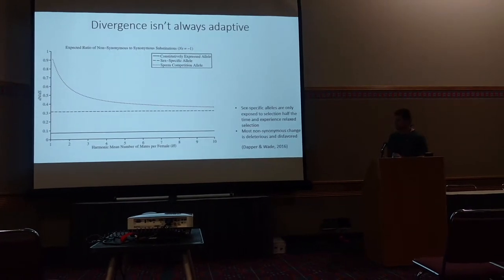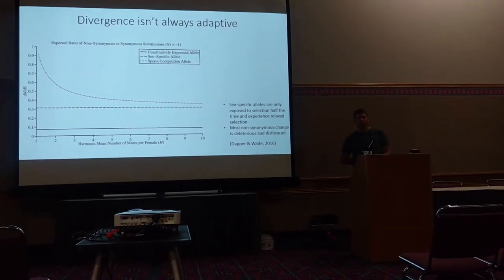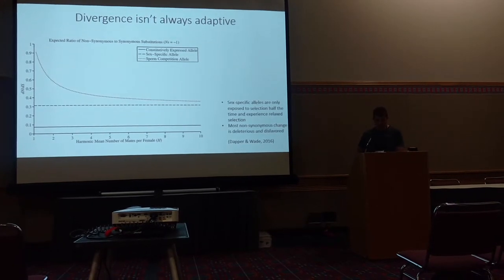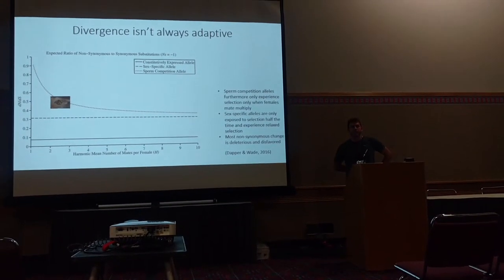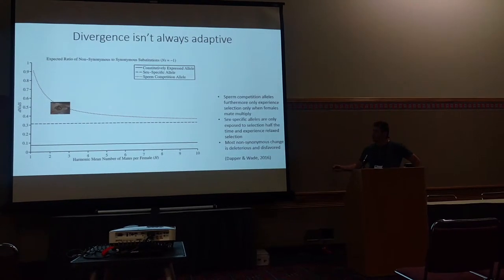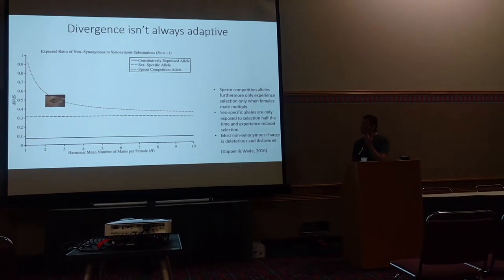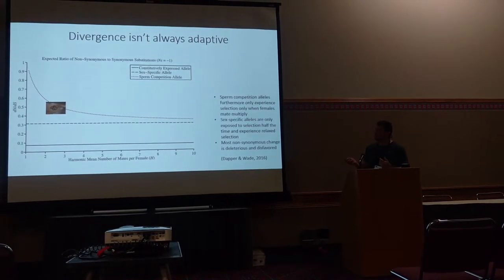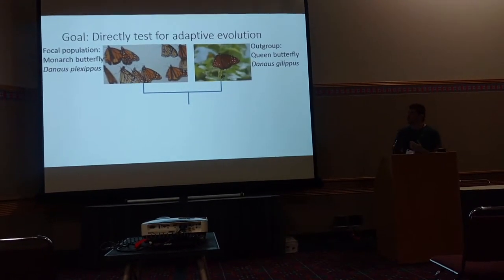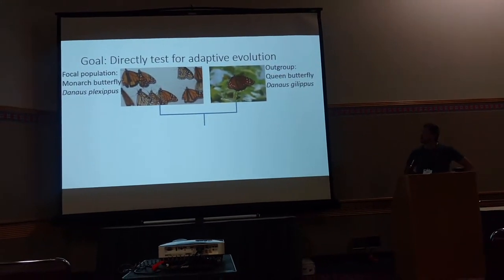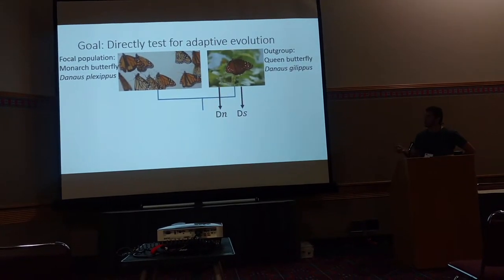This logical framework makes for nice, easy predictions about what we might see in the sperm proteome, provided we know the mating system, which we do. Monarch butterflies are actually some of the most polyandrous butterflies observed so far — two to three on the harmonic mean scale translates to a pretty frequent rate of remating. Our comparison species is Danaus gilippus, the queen butterfly, and by comparing divergences between monarch and queen, we'll get our divergence estimates.